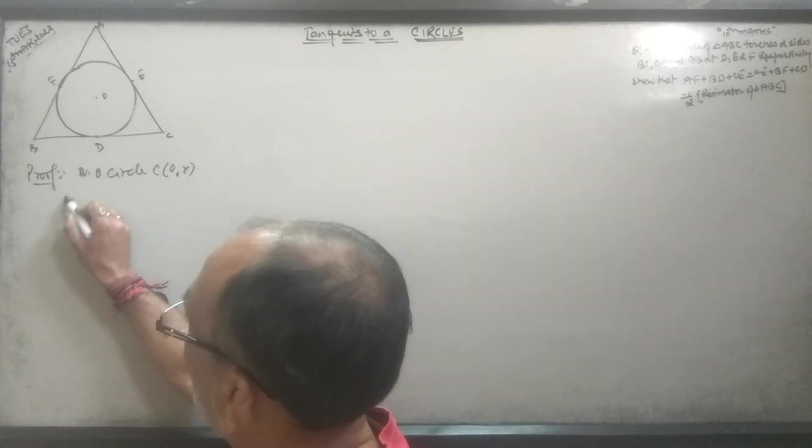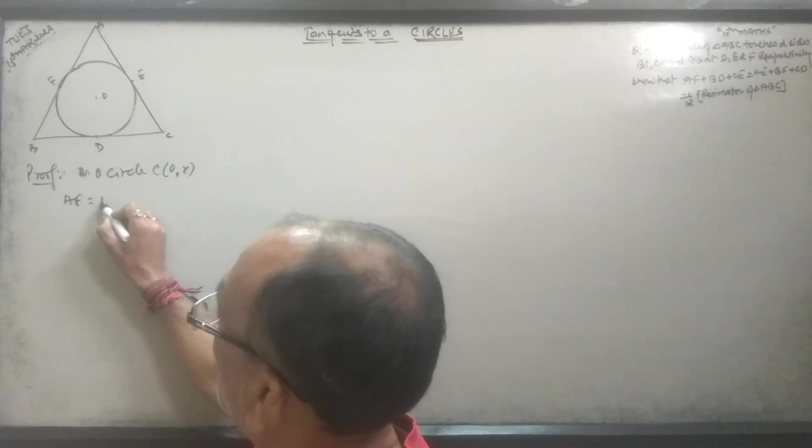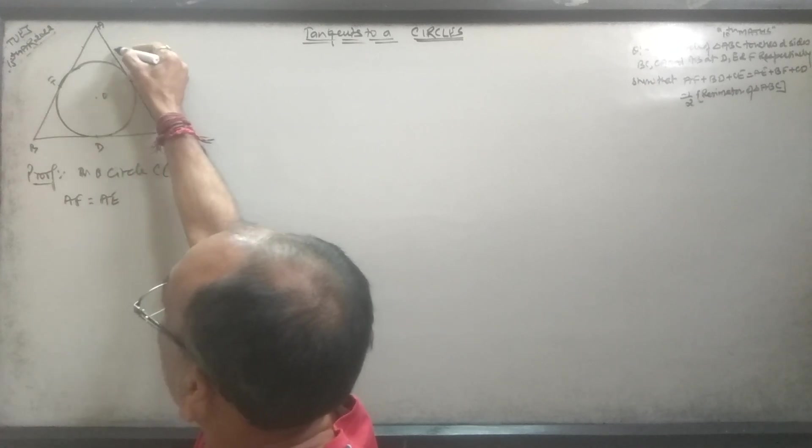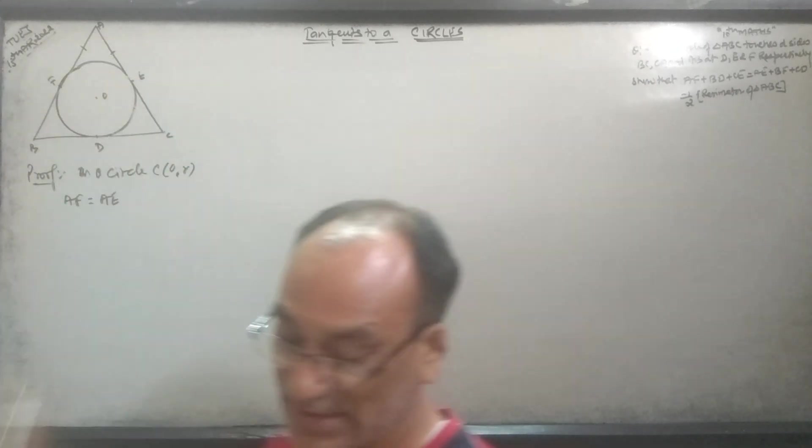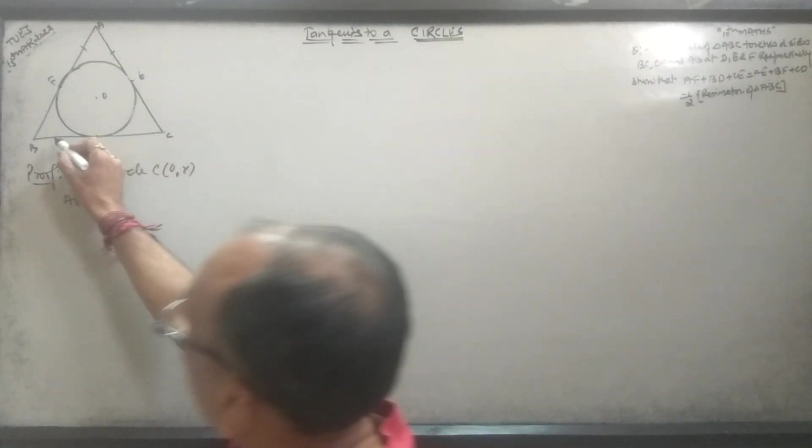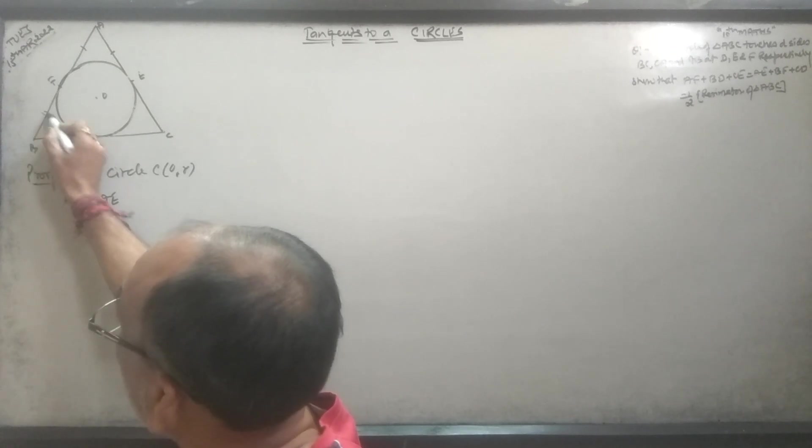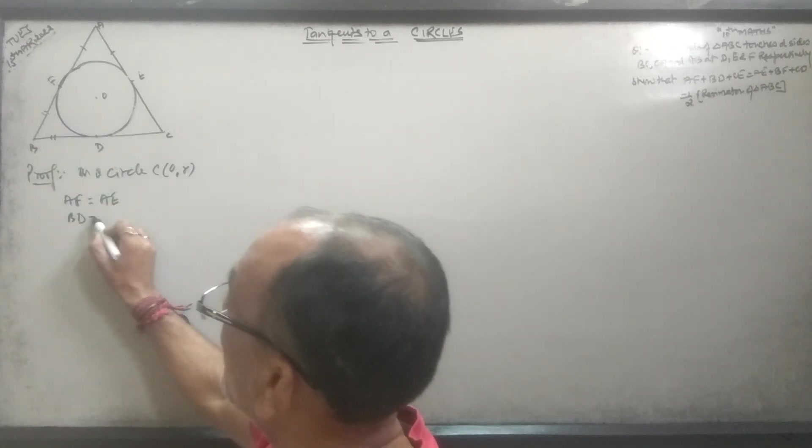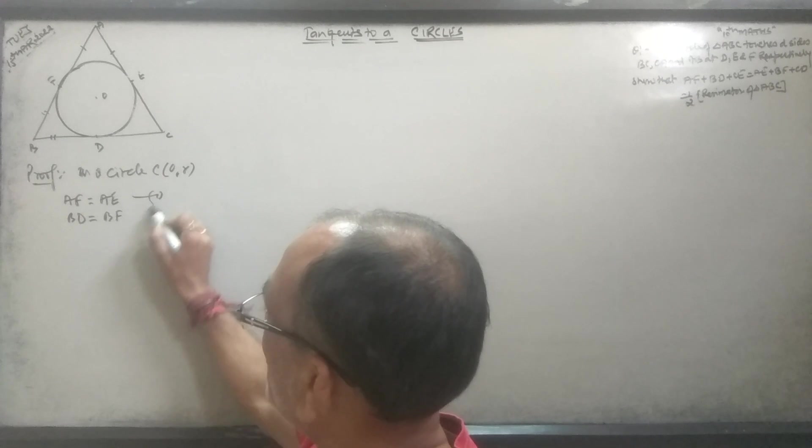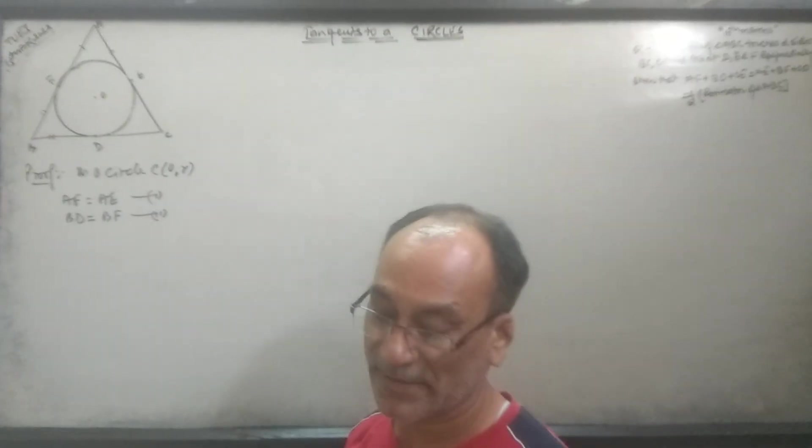AE is equal to AF. This is the property - when two tangents from the same external point, they are equal.